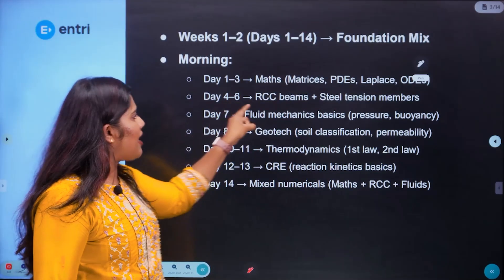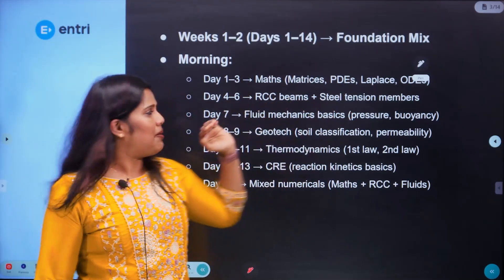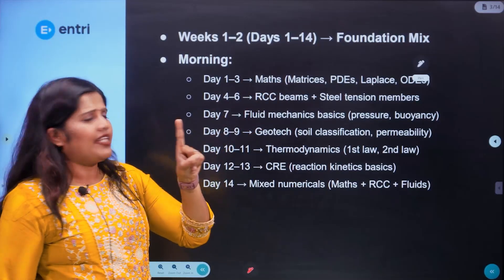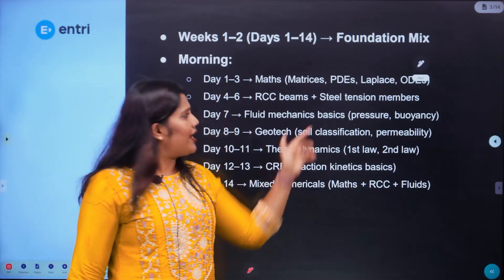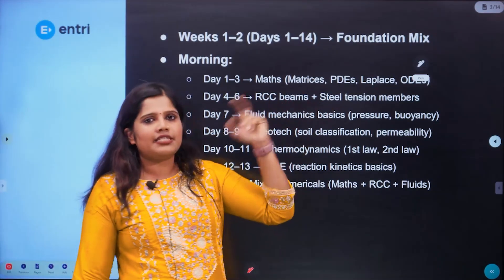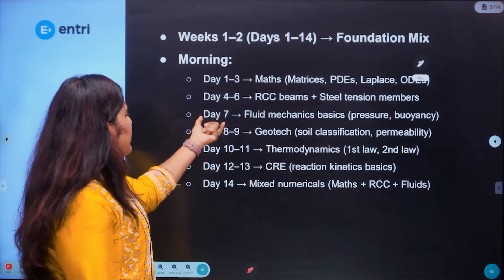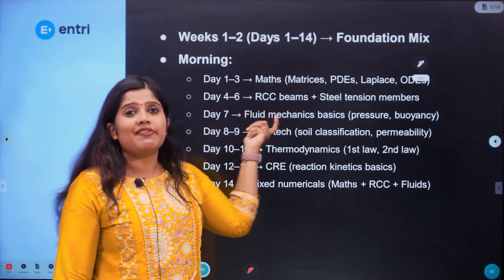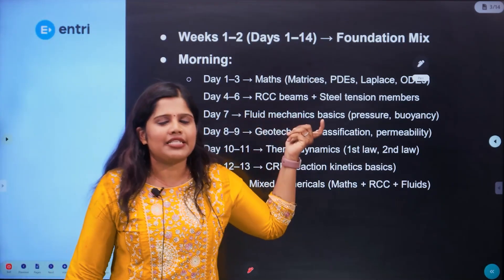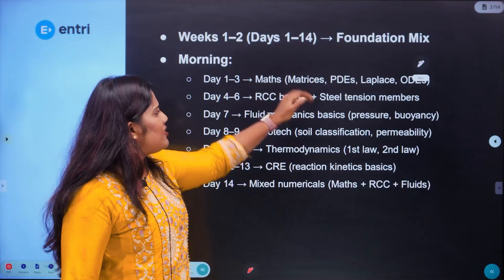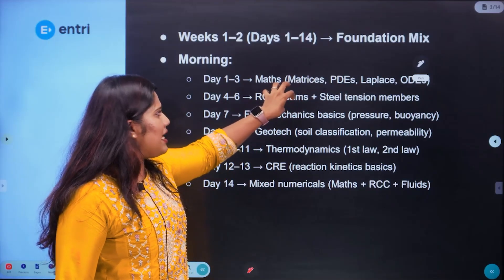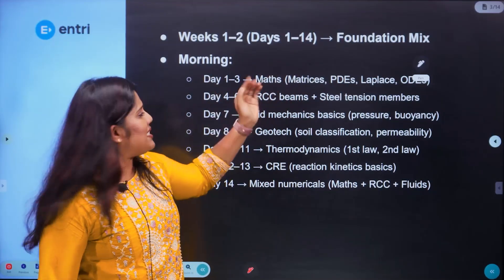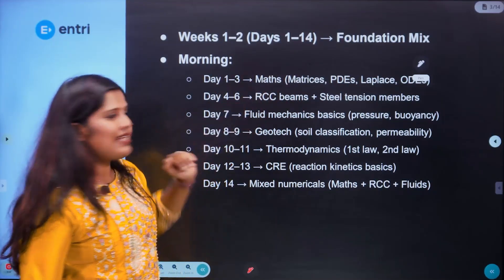Days 4 to 6 cover RCC beams and tension members — beams take about one day. You will be able to cover those topics at the next stage. Day 7 covers fluid mechanics basics, which are key in this class. I will study civil and chemical engineering topics. If you missed days 4 to 6, you will be able to incorporate that on day 7.